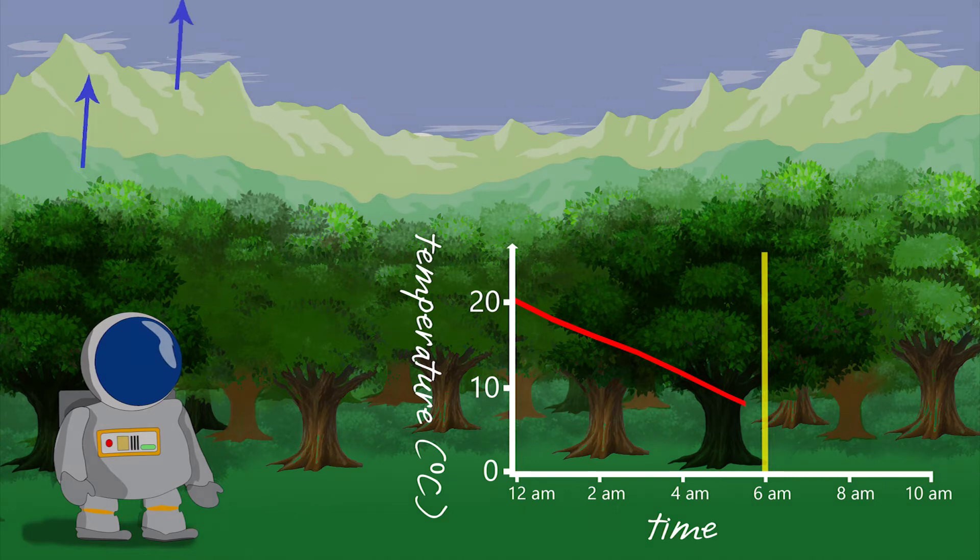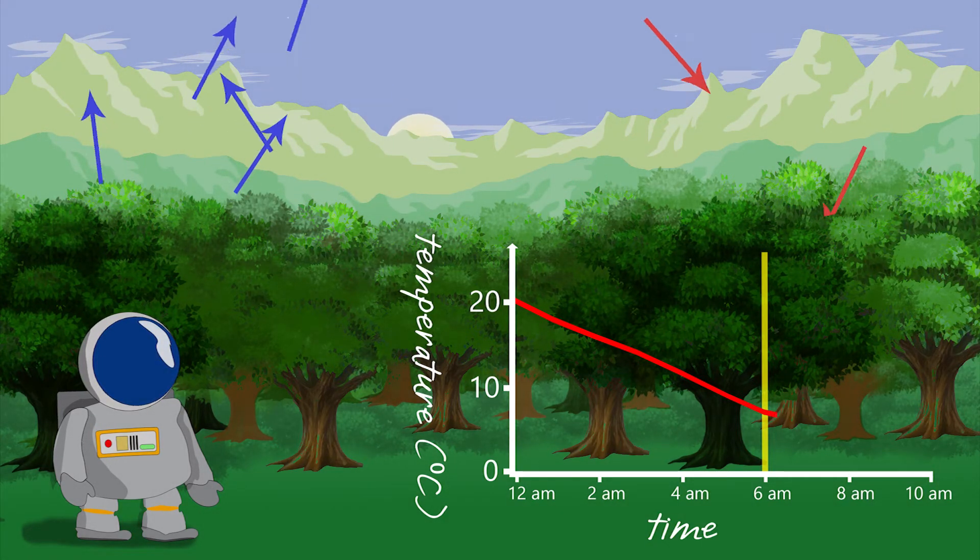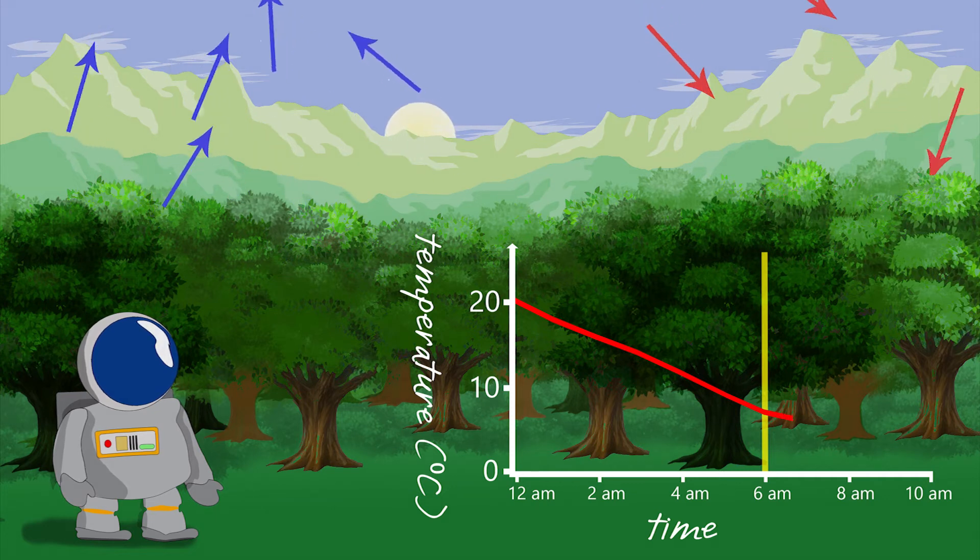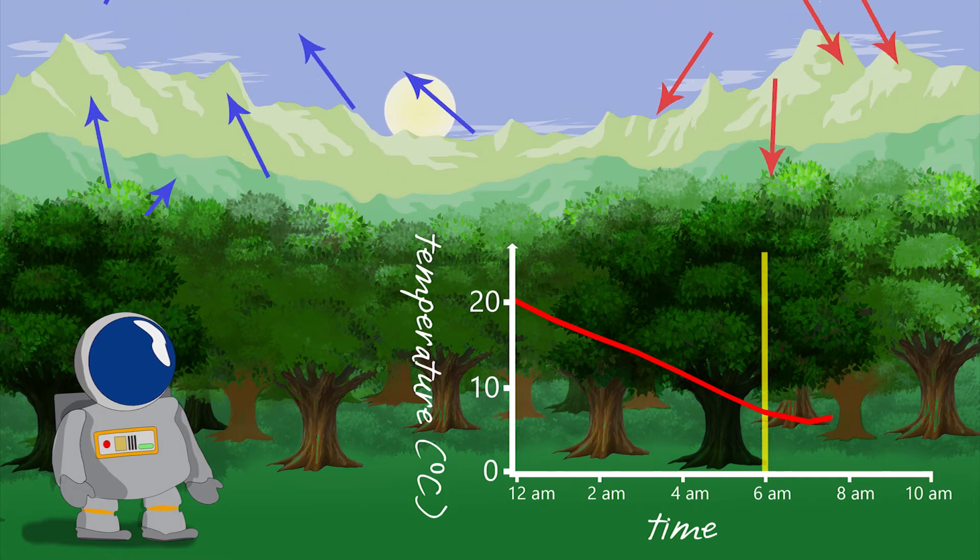It can take anywhere from half an hour to an hour before the incoming and outgoing energy balances out, and then as solar radiation continues to increase, it does finally get warmer.